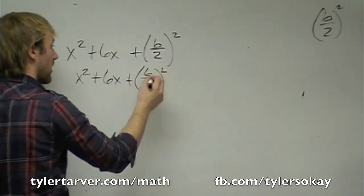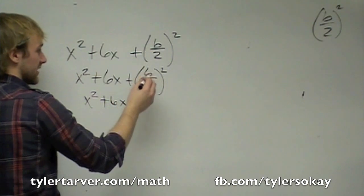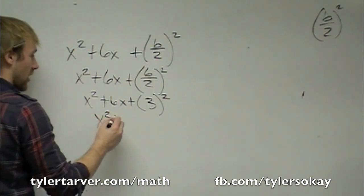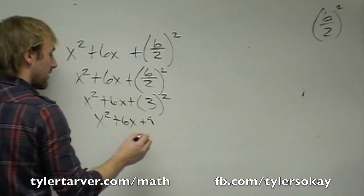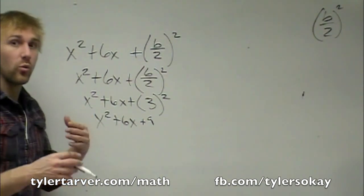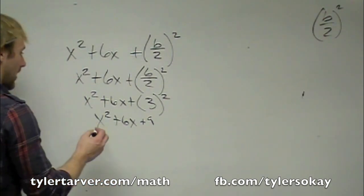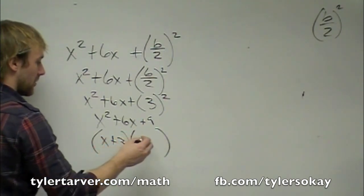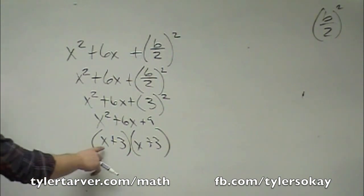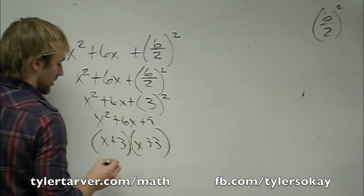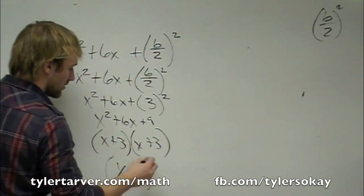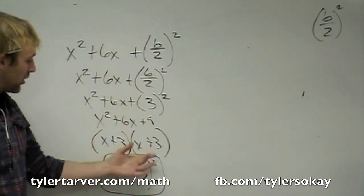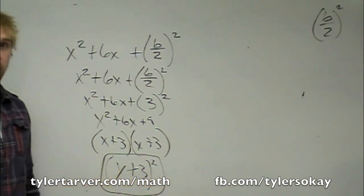That's 6 over 2 squared. We can simplify: 6 divided by 2 is 3. And then x squared plus 6x, 3 squared is 9. Can we factor this? What multiplies to be 9 and adds to be 6? Positive 3 and positive 3. Which, if that's something by itself, we can reduce that to x plus 3 squared. This is why we call it completing the square — you are taking a binomial and essentially putting it into something that can be squared.